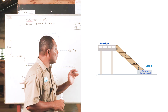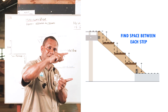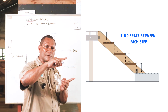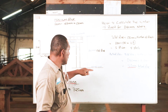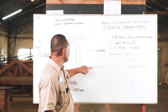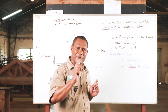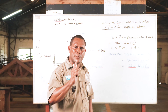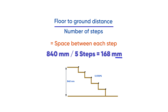The next thing you do now is find the spacing below each step. In order to find the spacing below each step, you take the total measurement from ground level to the floor, then divide it by the five steps. The answer you come out with is 168 millimetres — that is the 168 millimetre rise measurement for you to use.